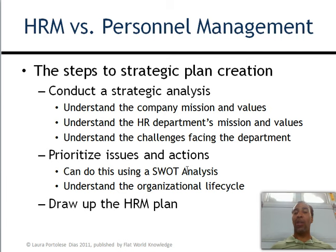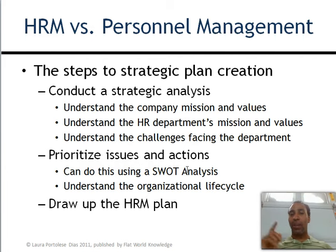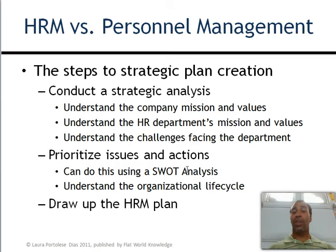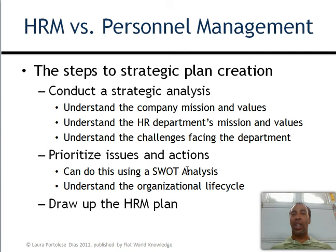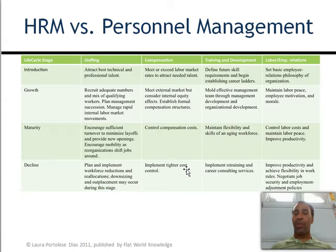You want to prioritize issues and actions using a SWOT analysis — Strengths, Weaknesses, Opportunities, and Threats. Draw a square with a vertical and horizontal line through the middle and list out the things about your company, department, or yourself in each quadrant. Then you want to understand the organizational life cycle — we have a slide covering that — and finally draw up the human resource management plan.